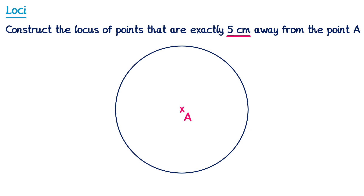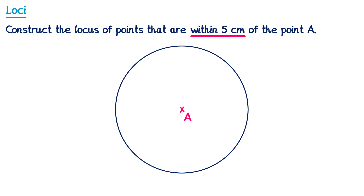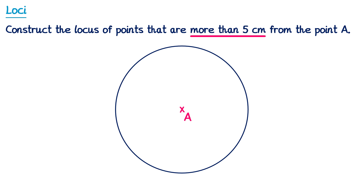There are two other loci related to this one. If instead the question asks for points within 5cm of A, that means all points less than 5cm away — those are all the points inside the circle, so we would shade the inside. Alternatively, if the question asks for points more than 5cm from A — 6cm, 7cm, and so on — those are all the points outside the circle, so we would shade everything outside.